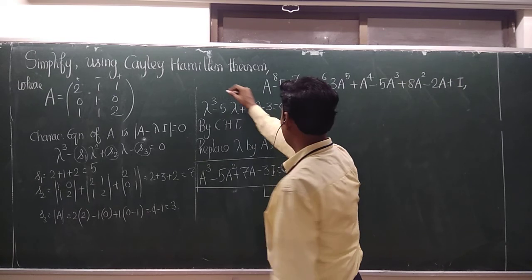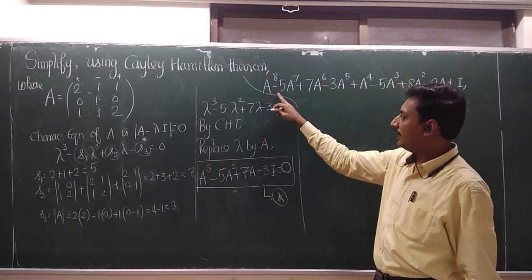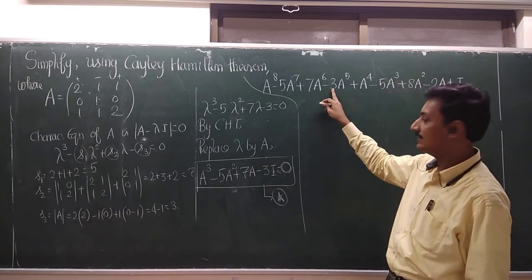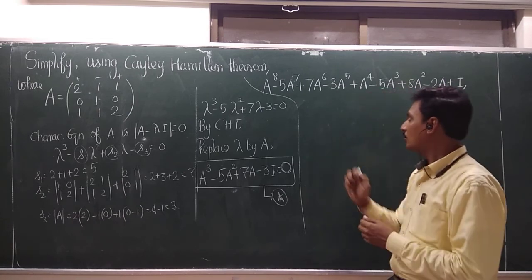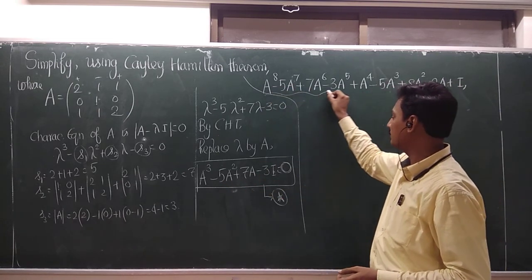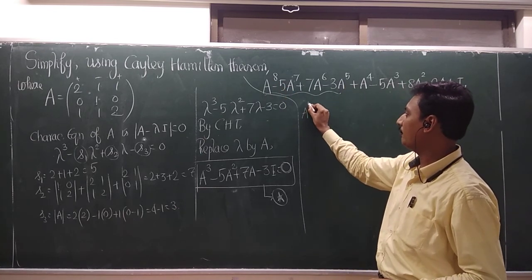Let us use this star equation to simplify the given matrix expression. How? Can you see that? Sir, A power 8 minus 5, I think minus 5, plus 7, plus 7, minus 3. So almost the coefficients are same. So can I pick 1, 2, 3, 4, 4 terms. First 4 terms. From the first 4 terms, I can take the maximum A to the power 5 outside.